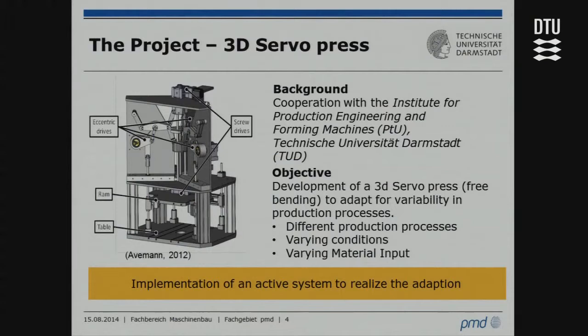The background is that we had a project together — a cooperation with the Institute for Production Engineering and Forming Machines, called PTU, at the Technische Universität Darmstadt. Their objective was to develop a 3D servo press, a free bending machine capable of adapting for variability. This variability includes different production processes, varying conditions, and varying material input. On the left side you can see a depiction of this machine.